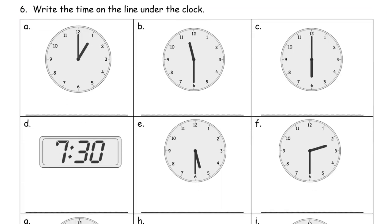Now it says write the time on the line under the clock. The line is really close to the bottom of the box. This clock has the hour hand pointing at the 1 and the minute hand straight up, so it's 1 o'clock. The next one has the hour hand in between the 11 and the 12, and the minute hand down at the 6 — that tells us 30 minutes. It's still 11 but not 12 yet, so it's 11:30, or half past 11.